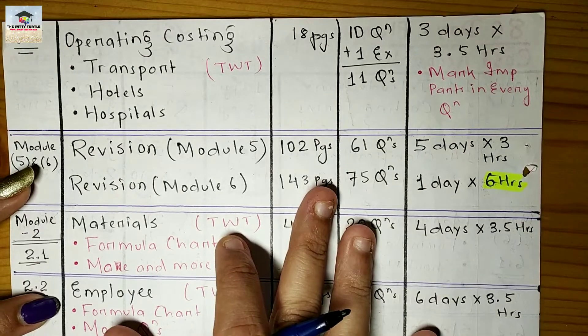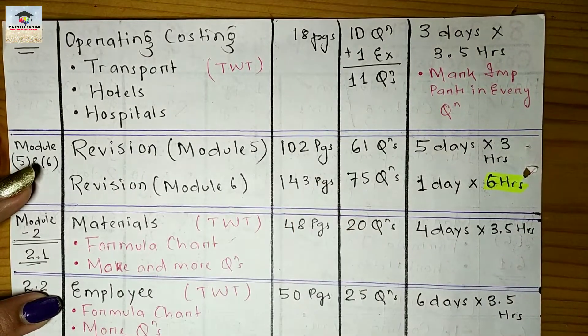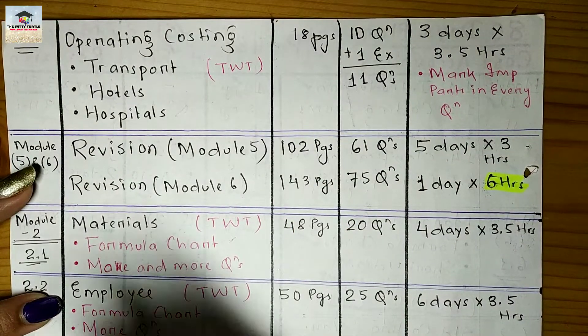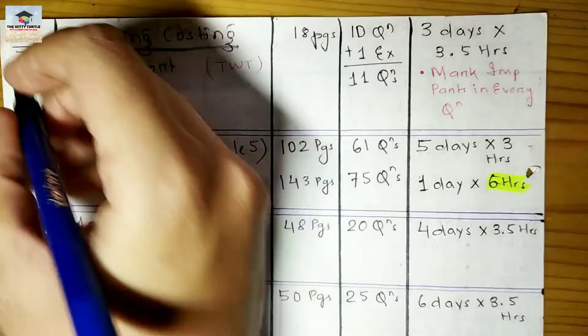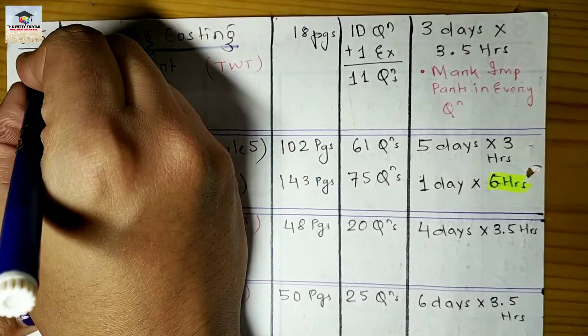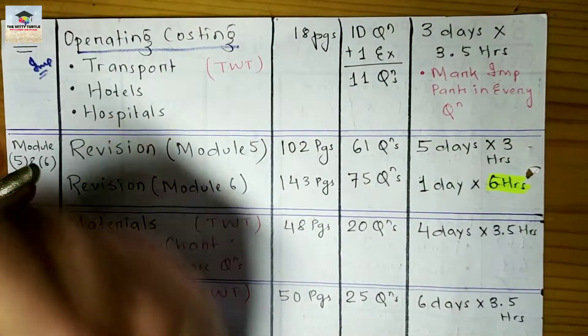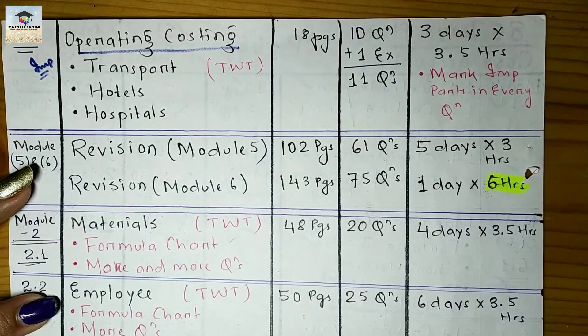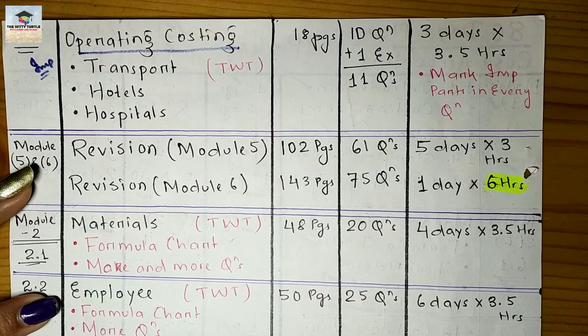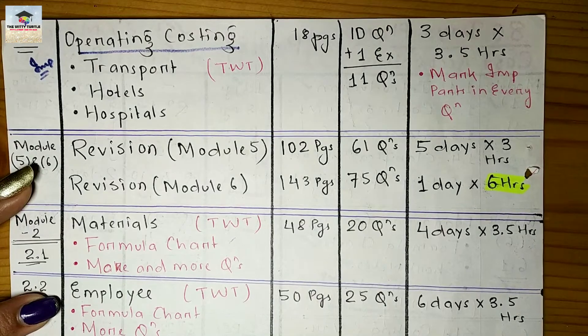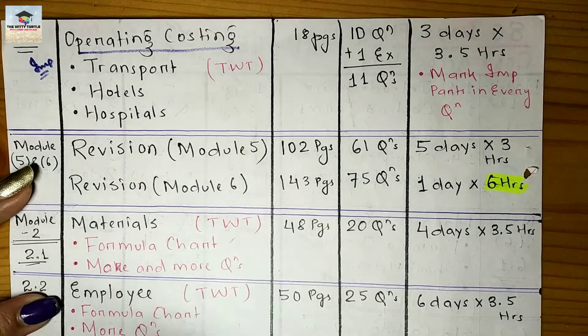The last sub-module of Module 5 is Operating Costing, which is very important because every year you will surely get one question from this particular chapter.